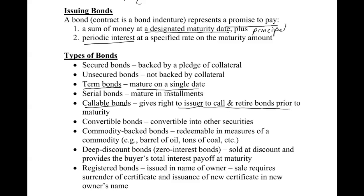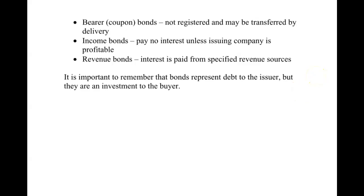Registered bonds are issued in the name of an owner, meaning that person has to surrender them at the point of sale. Bearer bonds are not registered and may be transferred by delivery. Income and revenue bonds are based on whether the company has income or a specific sort of revenue. You can see there's a wide variety of bond types, but I keep it simple and typically focus on term bonds and callable bonds — paying them off before maturity.